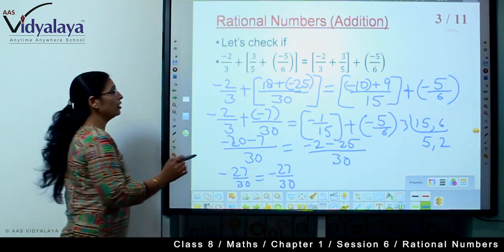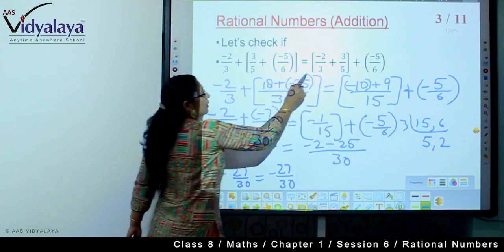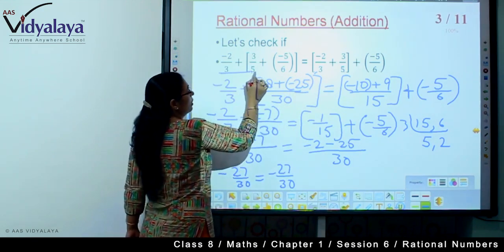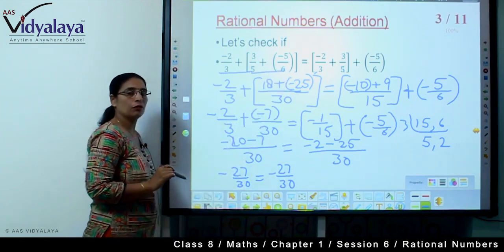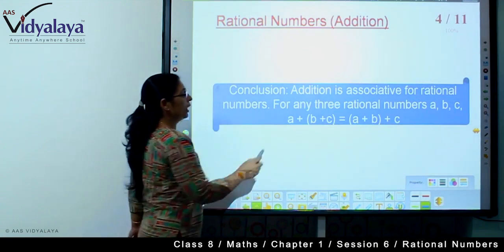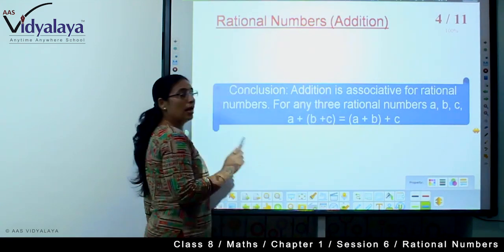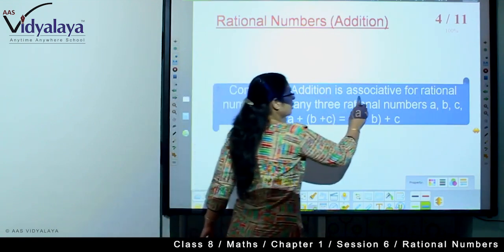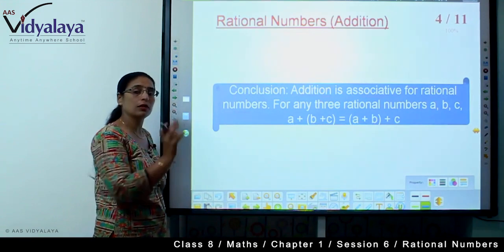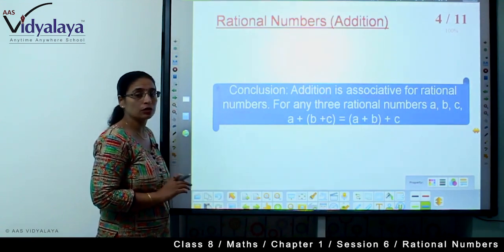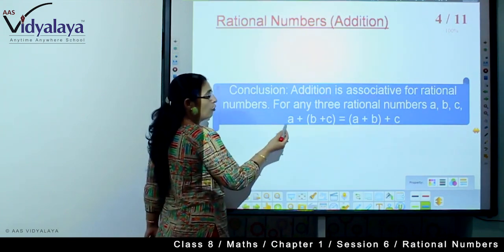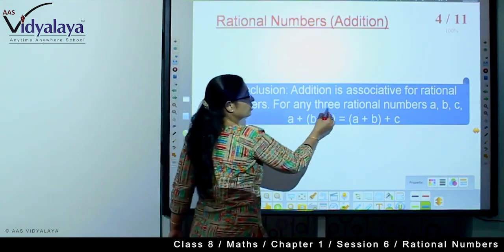So this means in addition we can make pairs of rational numbers. What do we learn? The conclusion is that addition is associative for rational numbers. Associative means we can make their association. We can look for which numbers we can do the calculation faster way.